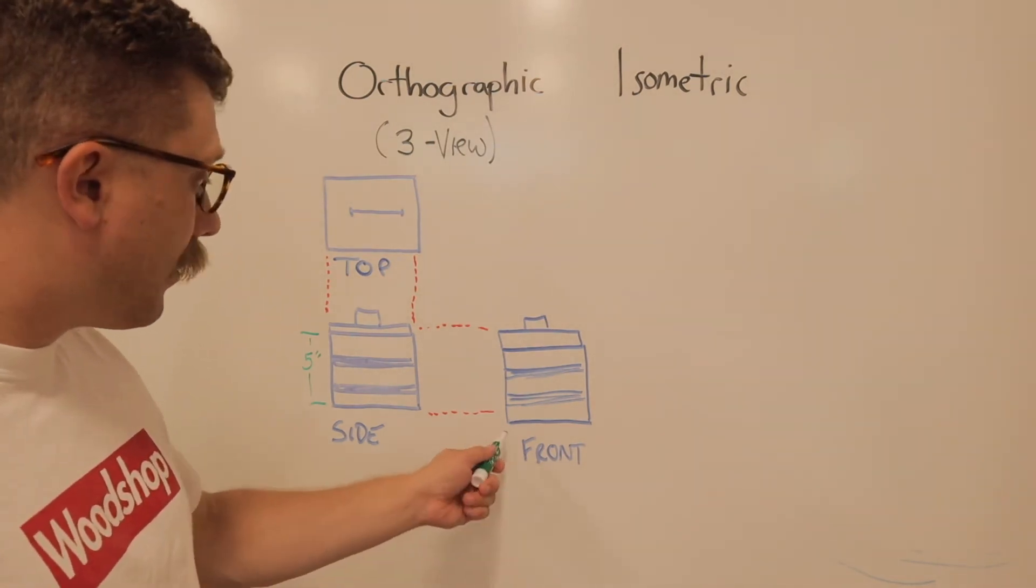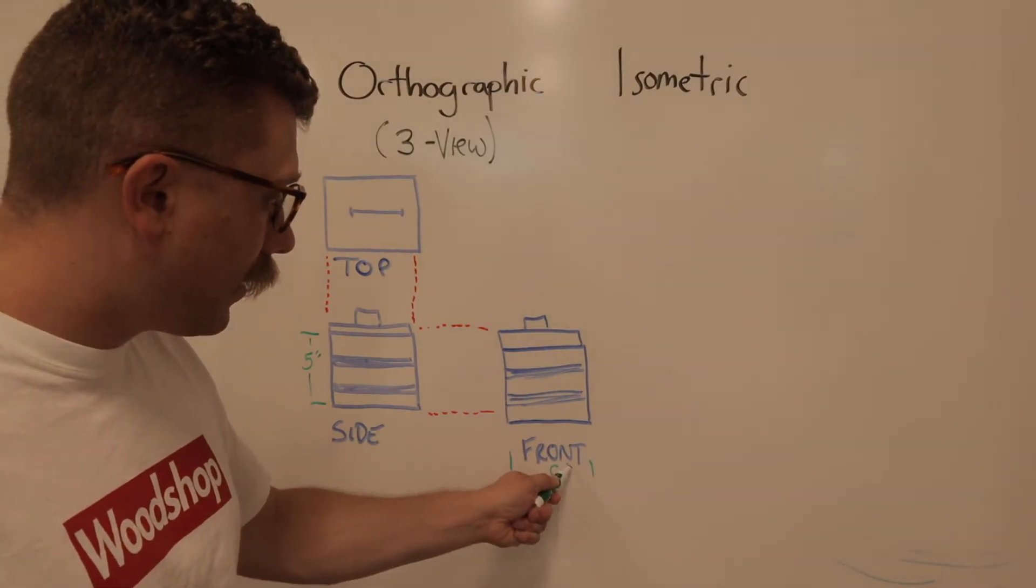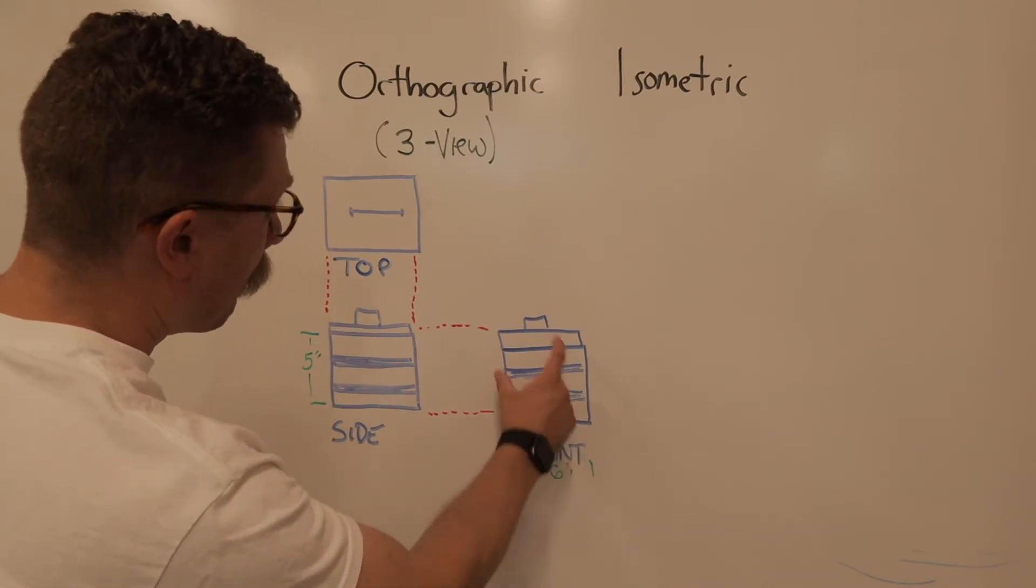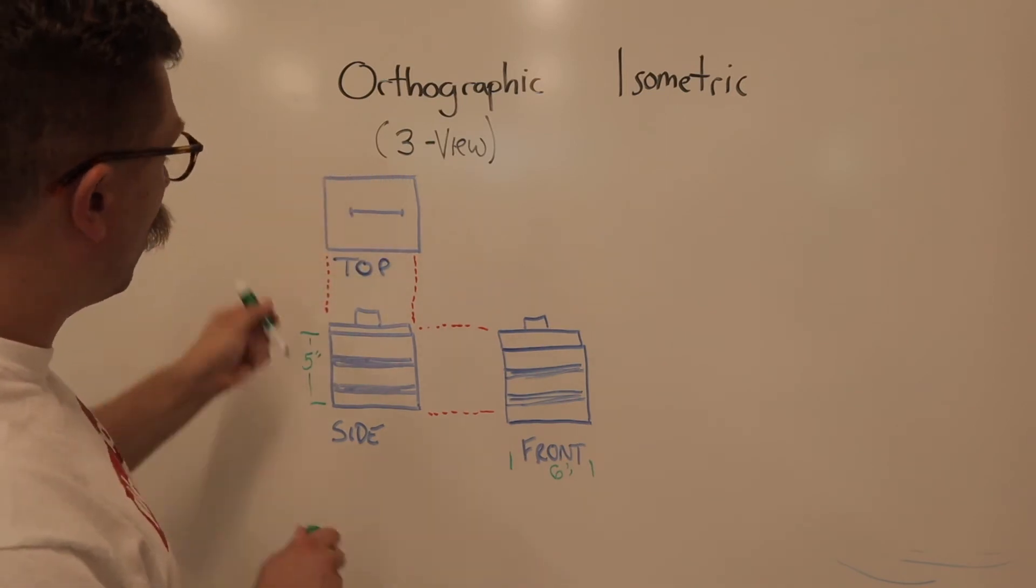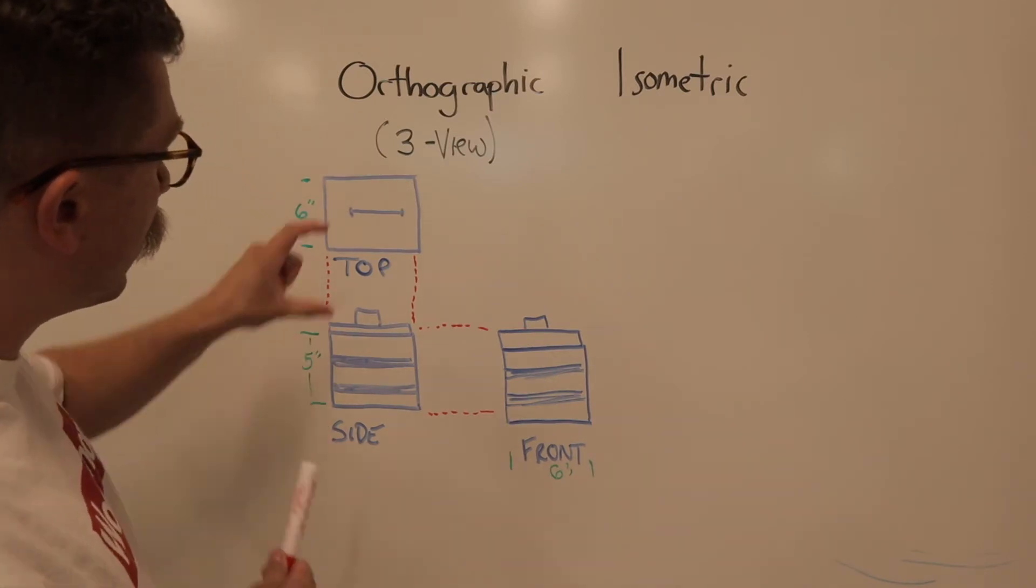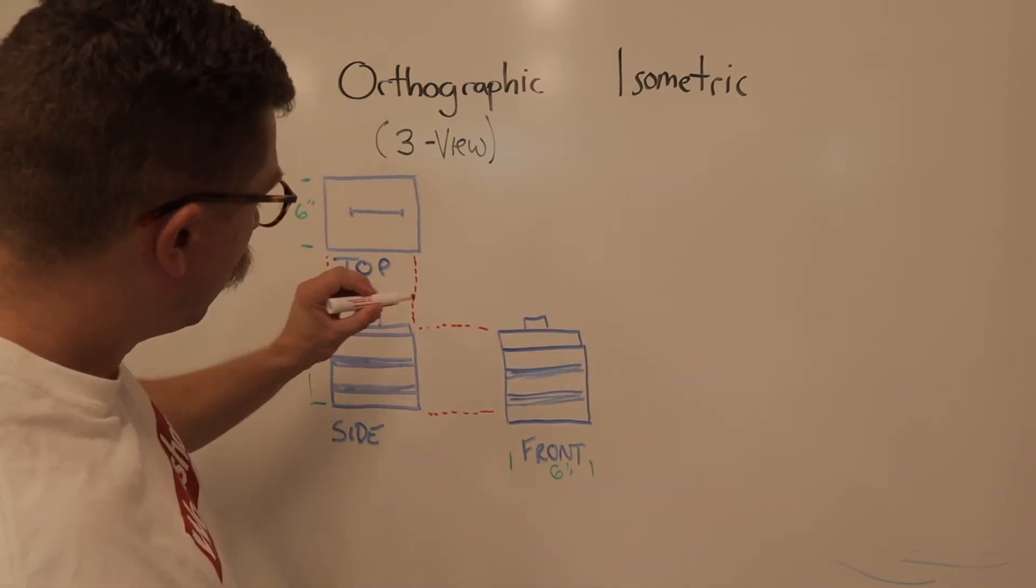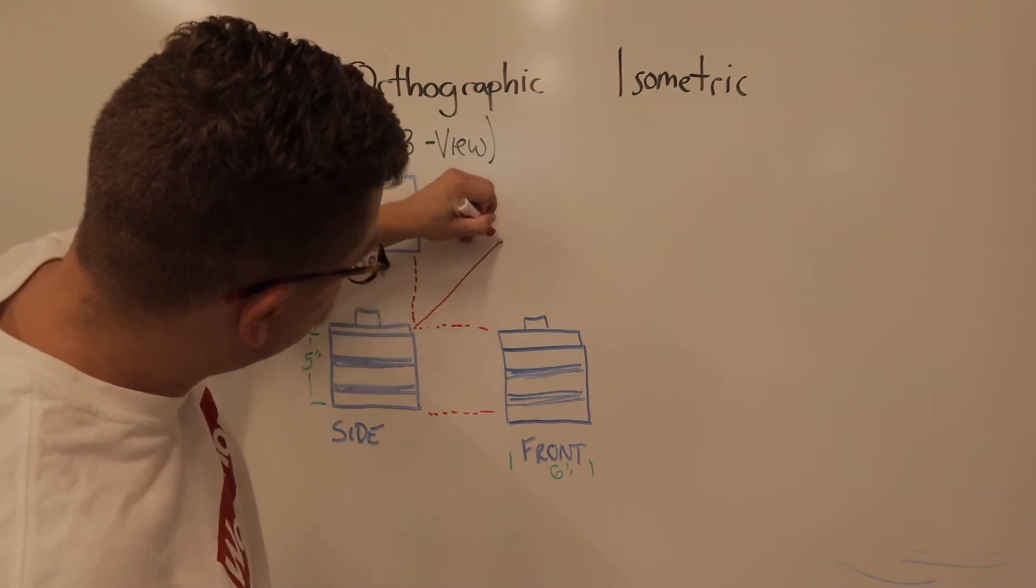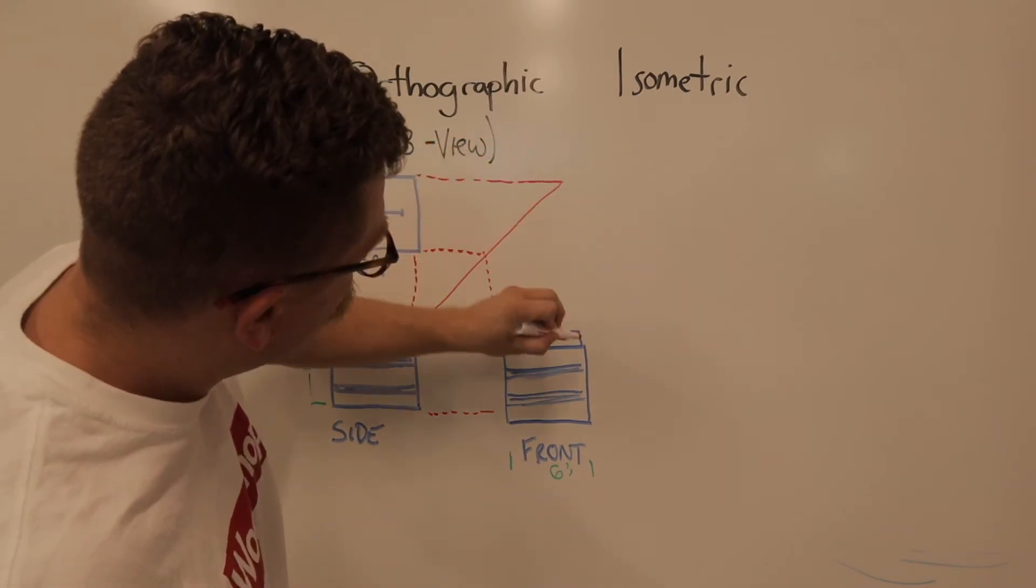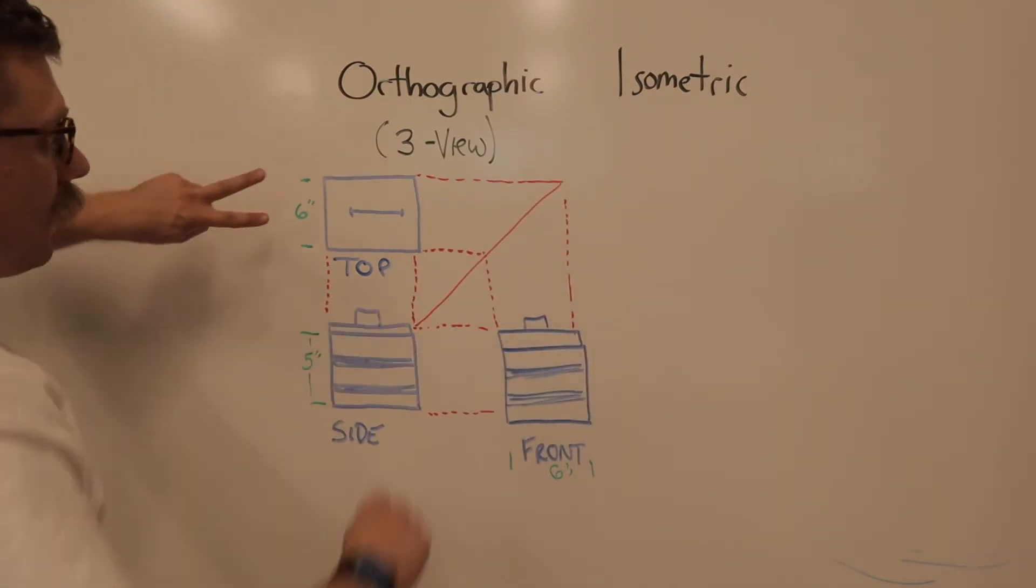If I were to dimension this, let's say that's six inches here. I know, because this is the front view, that this dimension here would also be six inches, because the top view and the front view line up with each other in this way. They kind of go off at a 45-degree angle, and if you were to carry this line over and carry this line down, this dimension is equal to this dimension.